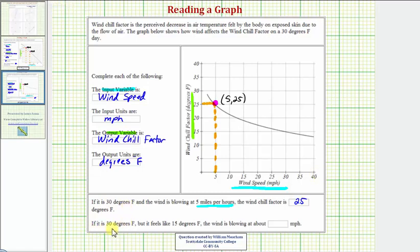Our next sentence, if it is 30 degrees Fahrenheit, but it feels like 15 degrees Fahrenheit, the wind is blowing at what miles per hour? Notice here, we're given the function output, or the windchill, which is given as 15 degrees Fahrenheit.